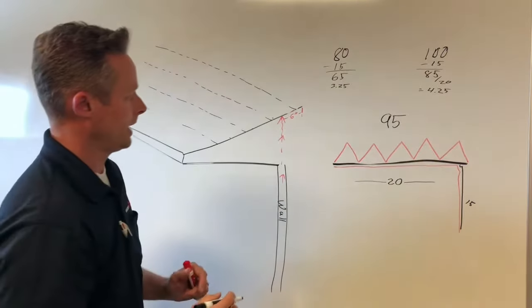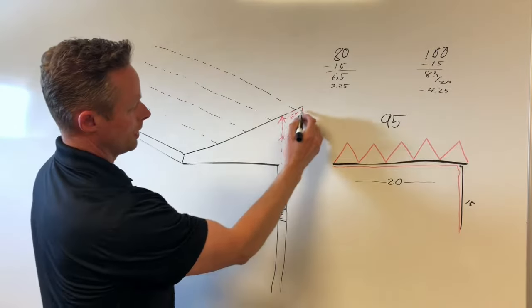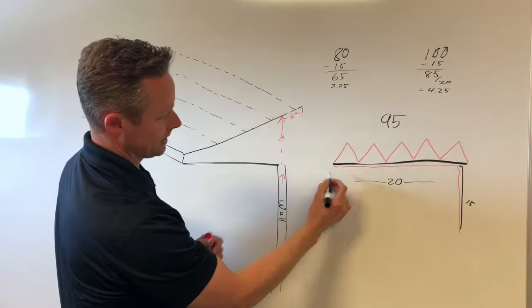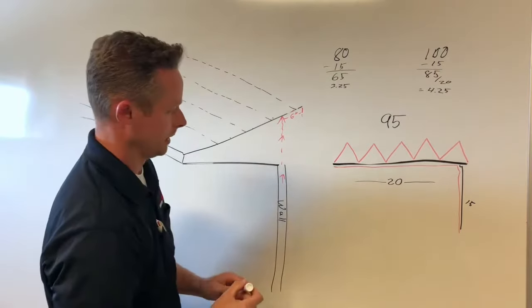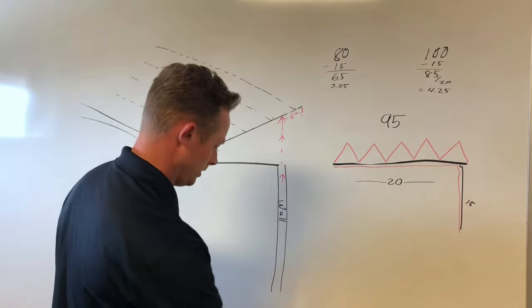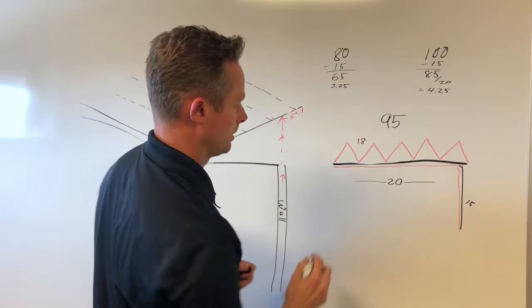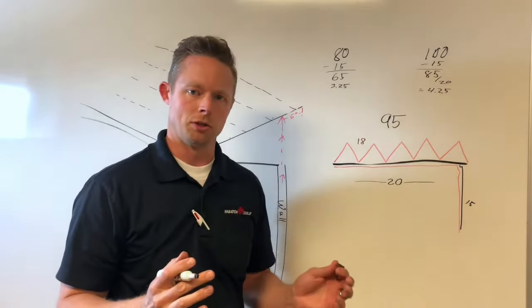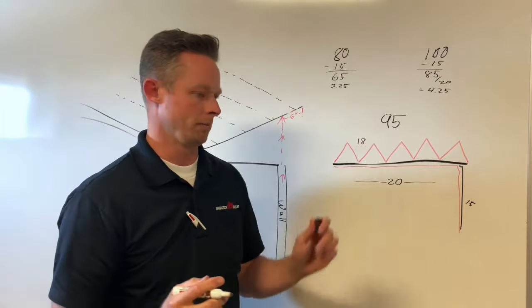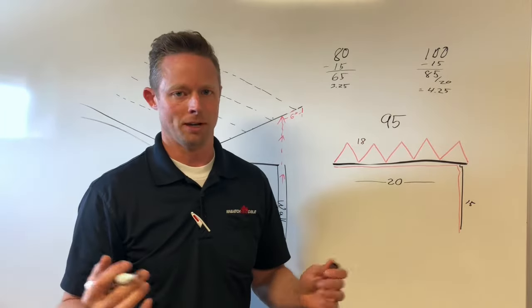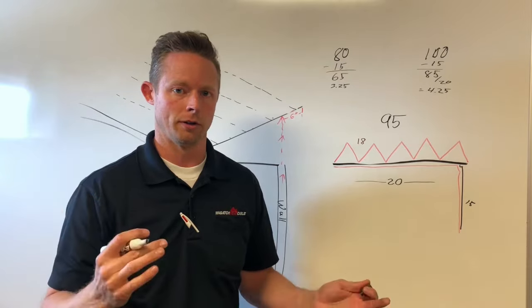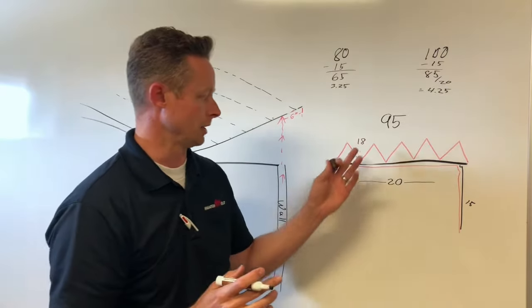Now once you have that area, you then want to figure your spacing of your loops. Let me do this part in red. So let's say we want to go 18 inches. Most of the time when you space these things out it's anywhere from maybe 18 up to about 24. You can go bigger or smaller than those but those are common numbers to work with.